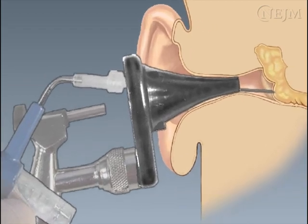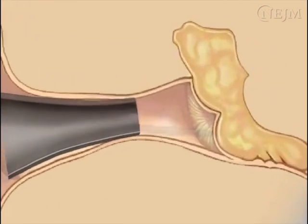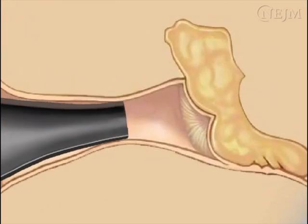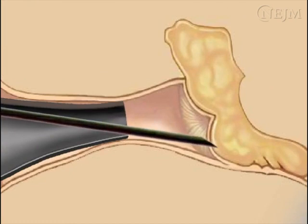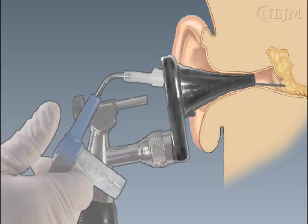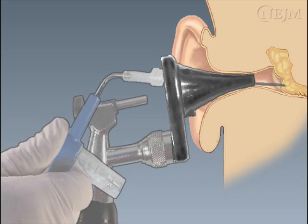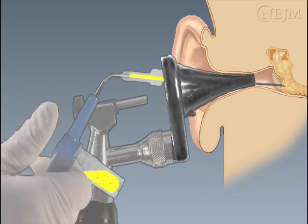Insert the needle tip through the inferior portion of the tympanic membrane 2-3 millimeters above its inferior rim. Immediately after penetrating the tympanic membrane, place your thumb on the orifice of the tympanocentesis aspirator and start suctioning the middle ear fluid. Once pus is visualized in the aspirator, promptly remove your thumb from the aspirator to avoid losing the specimen into the suction tubing.